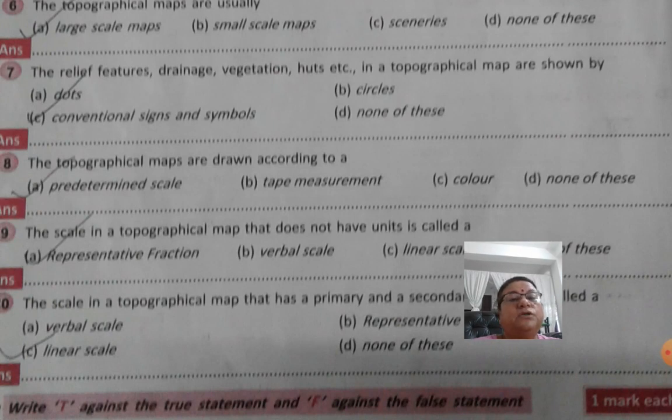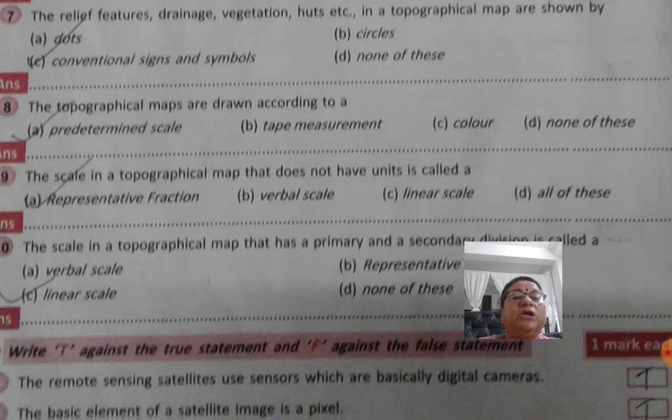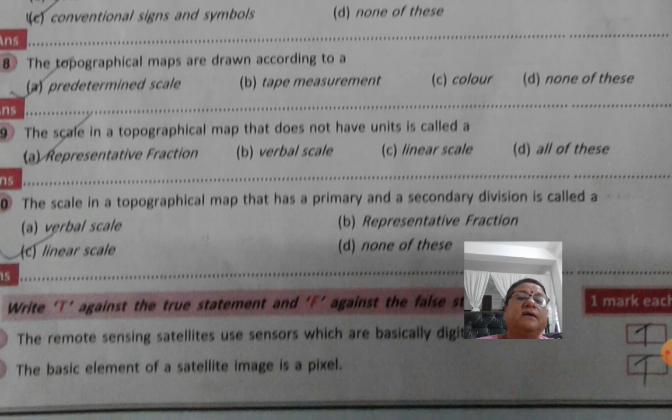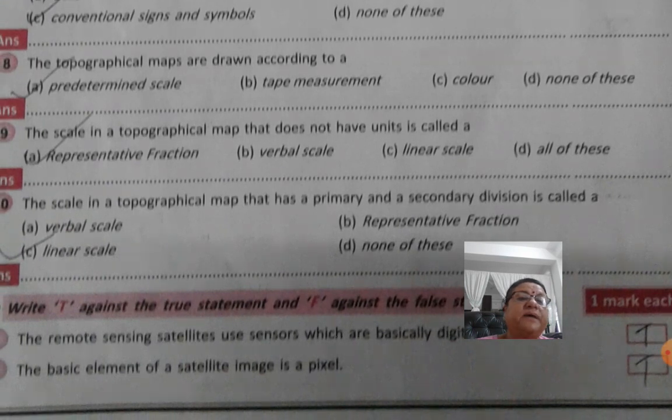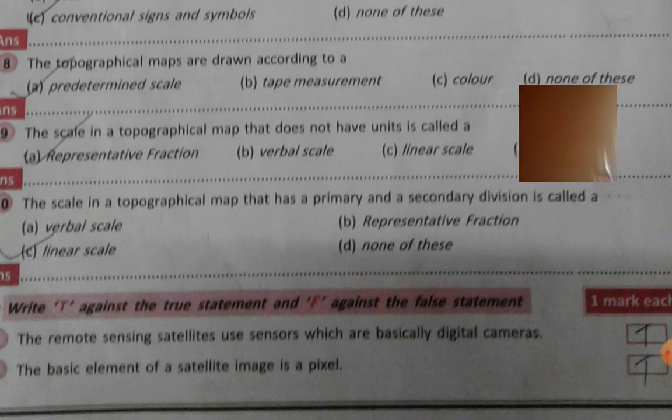The topographical maps are drawn according to predetermined scale. The scale in a topographical map is called representative fraction. The scale in a topographical map that has primary and a secondary division is called linear scale. So, up to here is your MCQ multiple choice.